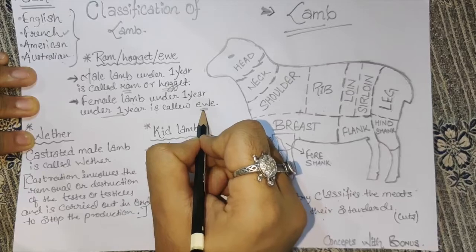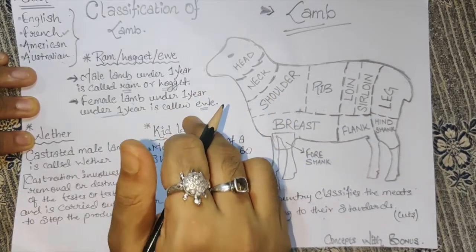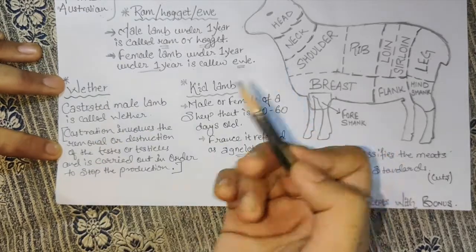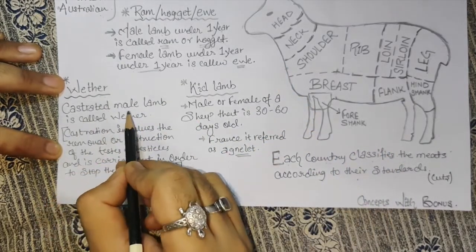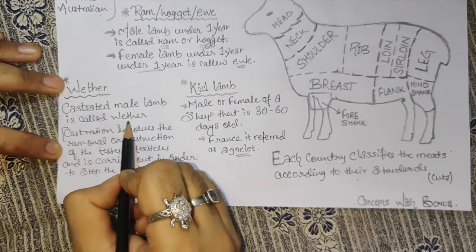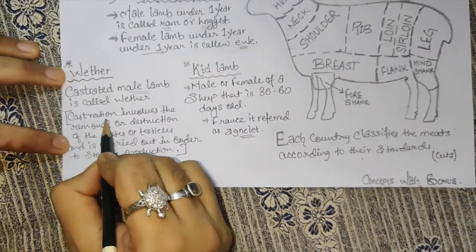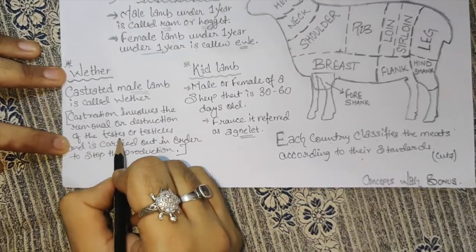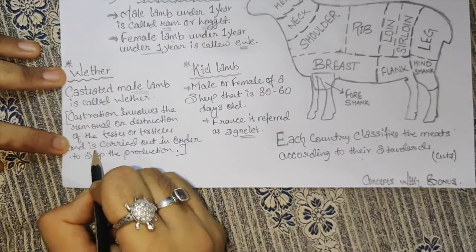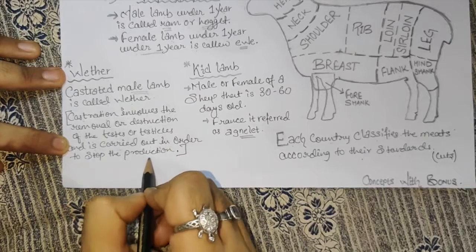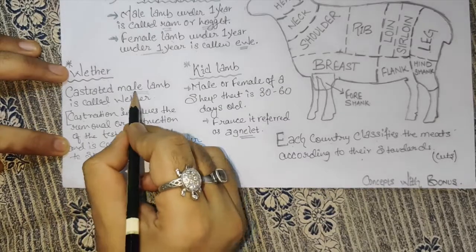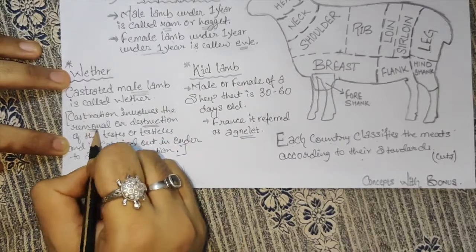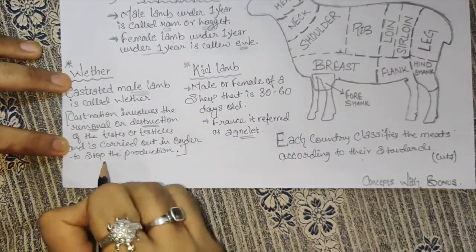This is important — remember this. A castrated male lamb is called a Wither. Castration involves the removal or destruction of the testes or testicles, and is carried out in order to stop production.